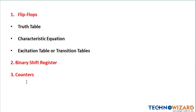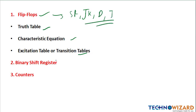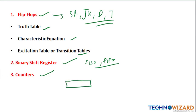What we will cover in sequential circuits: first is the truth table, then the characteristic equation, the excitation table or transition table. Flip-flops covered include SR, JK, D, and T flip-flop. After that, binary shift registers — SIPO, SISO, PIPO — and finally counters. I have not seen counters in much detail in ISRO question papers, but we will see some questions related to this.